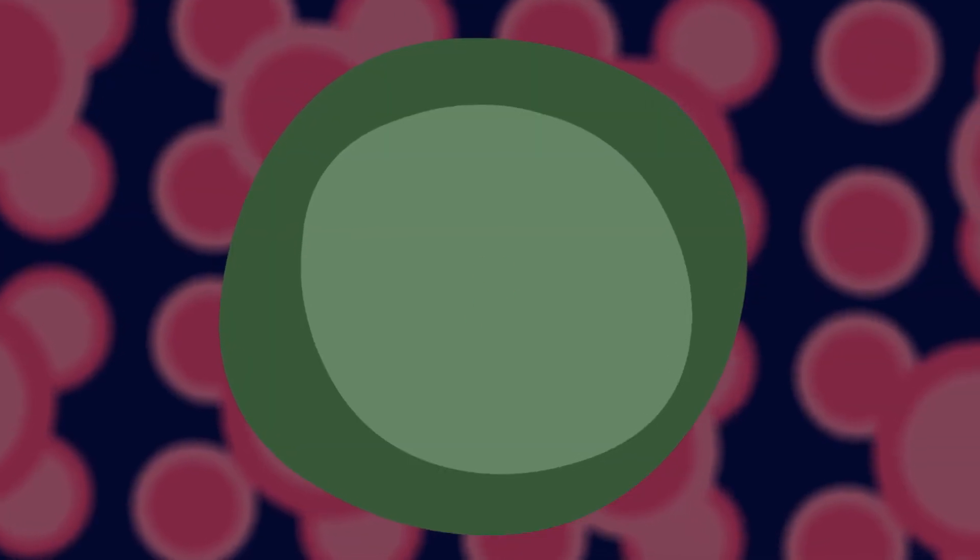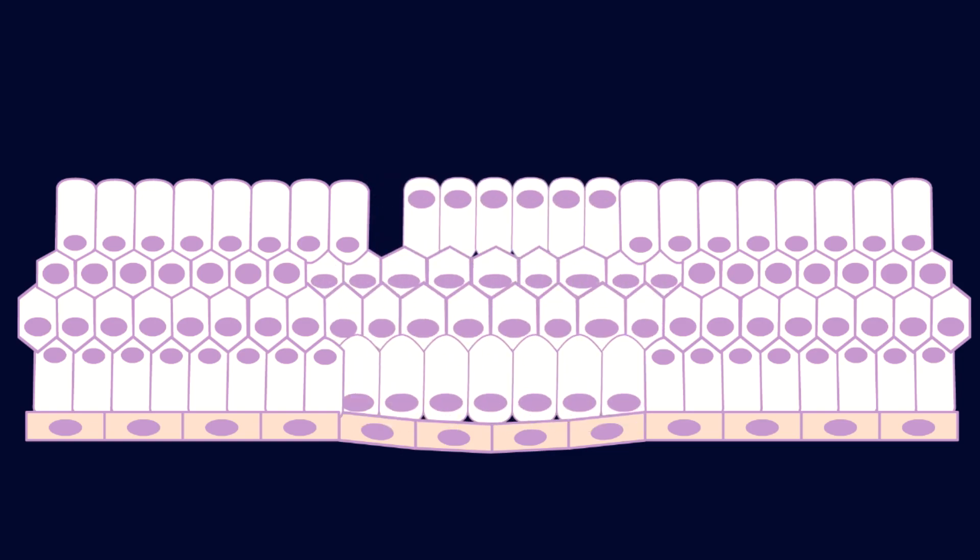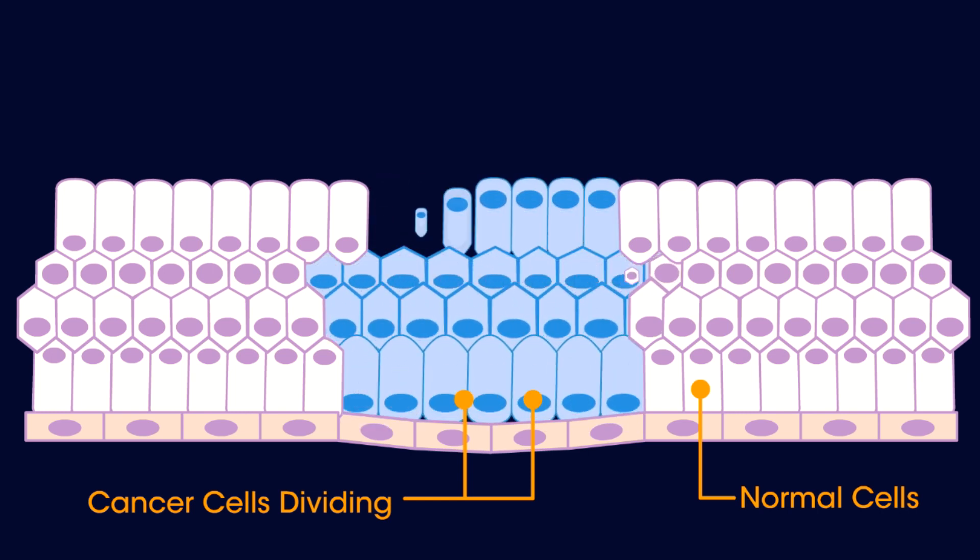So mutations do the damage. But what causes them to happen? Cells are usually very good at repairing damage to genes. They have special repair mechanisms in place. But over time the damage may build up and then it can be a domino effect. Once the cell starts growing too fast and dividing rapidly, they are more likely to pick up even more mutations and less likely to repair the damage.